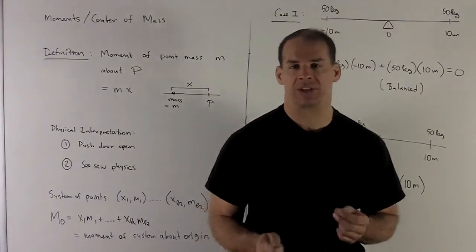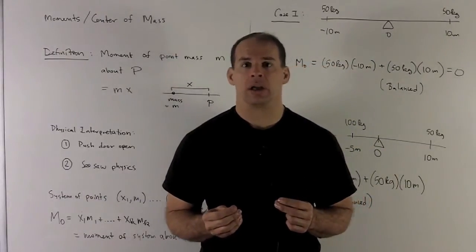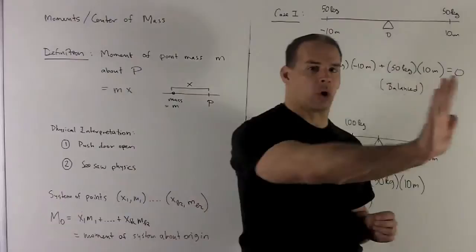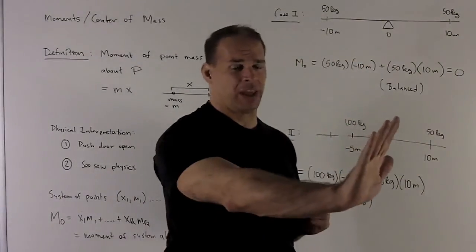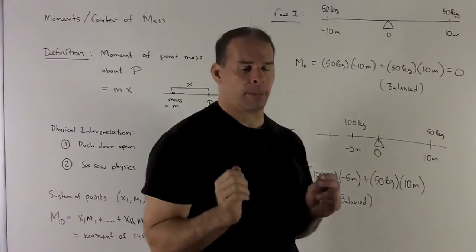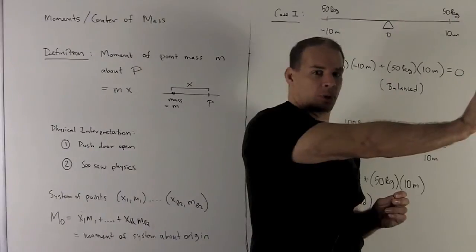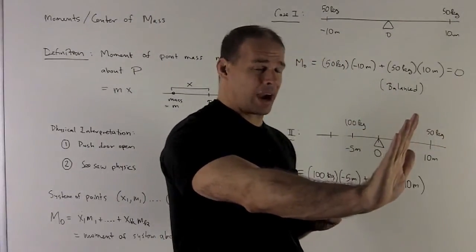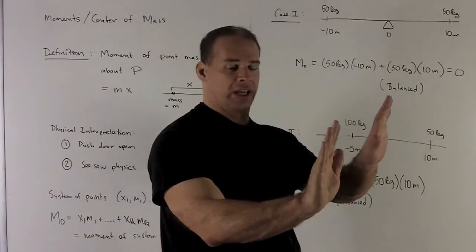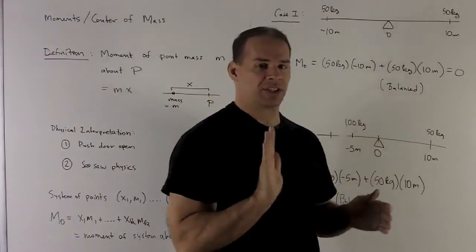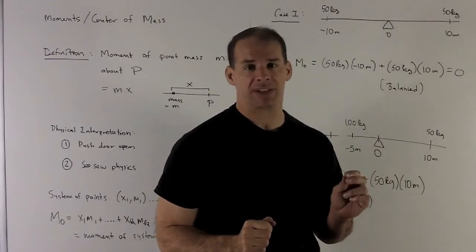Physical interpretation of this: First one is think about how you open a door. If I'm pushing a door open it's much easier if I push on the outside the door than if I push near the hinges. What we're measuring here is you have a larger moment when you push further away than when you're closer to where the door turns. So moment is measuring something about distance and something about force. And in this case I'm not going to talk about force, we're just going to talk about mass.